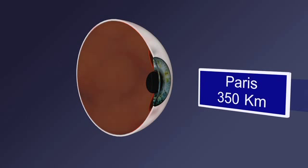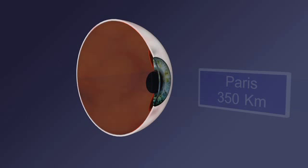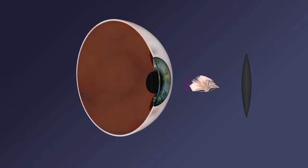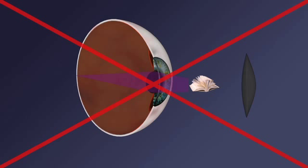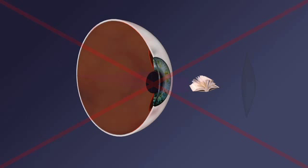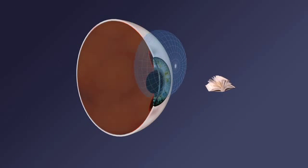The retina sends the visual message to the brain through the optical nerve. For distance vision, light rays are focused directly onto the retina. However, for near vision, the accommodation of the crystalline lens must bring back the focusing on the retina — for instance, for reading. Presbyopia makes this accommodation impossible, and we then need contact lenses or glasses to be able to read.